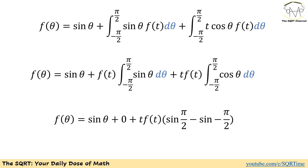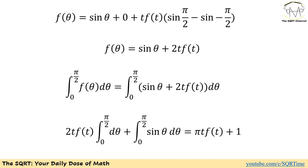Now for the third term: the integral of cosine(θ) dθ evaluates to sine(θ) between −π/2 and +π/2. This gives us sine(θ) plus t·f(t) times [sine(π/2) minus sine(−π/2)]. At the end, f(θ) equals sine(θ) plus 2·t·f(t). Now that we have f(θ), remember the problem asks us to calculate the integral of f(θ) dθ between 0 and π/2.